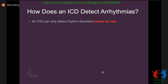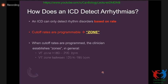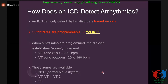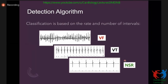The ICD detects arrhythmia first by rate, programmed as cutoff zones — VT or VF zone. We can define zones such as VT1, VT2, and VF zone, with different therapies in each. We can tell the device whether a zone should have active therapy or monitoring only. This is based on rate and number of intervals of the arrhythmia.